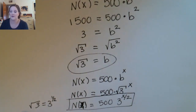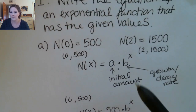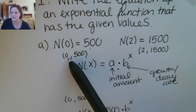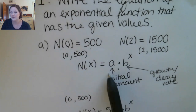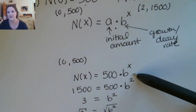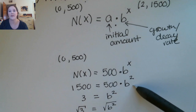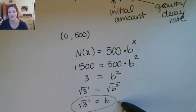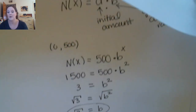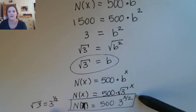Just to recap: we used the point (0, 500) to fill in our initial amount a, then we plugged in our second point to solve for b, and finally we plugged in our value of b to write the final equation.